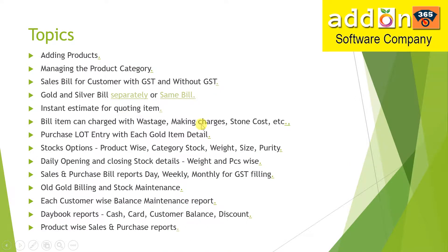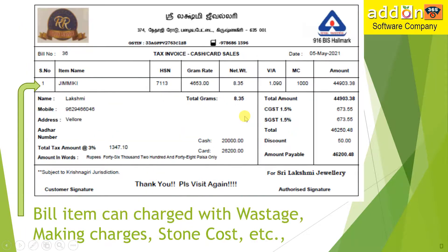For example: wastage, making, stone, cast, etc. This is the bill design — item name, HSN code, gram rate, net rate, and you can use the base stage. If you have GST, you have a percentage of GST. You can also use MCN, which is making charges. You can use the column for stone cost. You can use sales and item-wise reports.